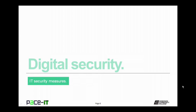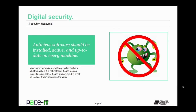Now let's move on to digital security. We begin with a discussion on antivirus. Antivirus software should be installed, active, and up-to-date on every machine. If it's not installed, it can't stop a virus. If it's not active, it can't stop a virus. If it's not up-to-date, it won't recognize a virus. So be sure and use an antivirus on every machine.